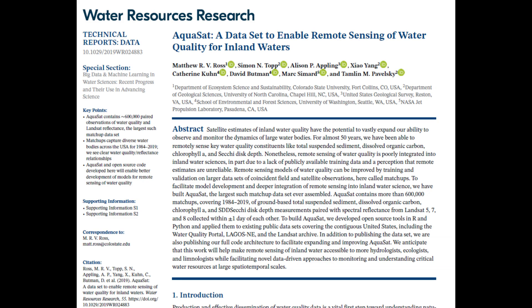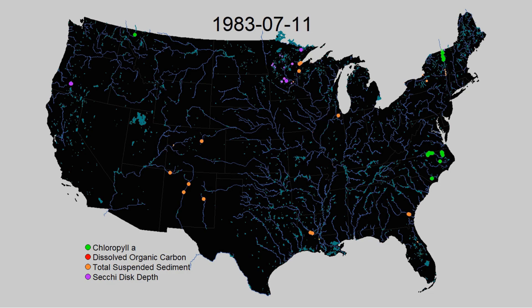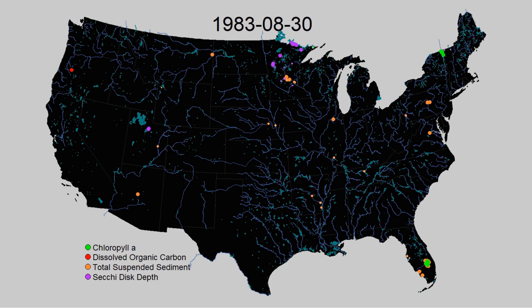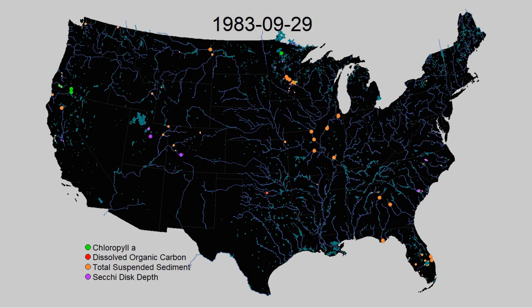For most of the 20th century, when society wanted to better understand the quality of our waters, we had to send someone out to the field to collect a sample in lakes, rivers, or estuaries. They would then analyze the sample in a lab and report back the water quality to a city, state, or federal entity that managed the data. In the United States, for many decades, these data were held separately across hundreds of entities.